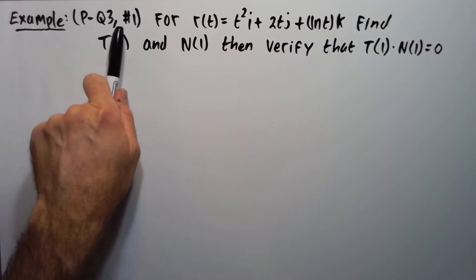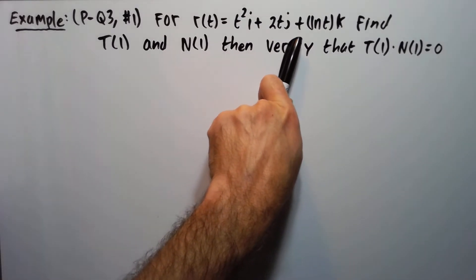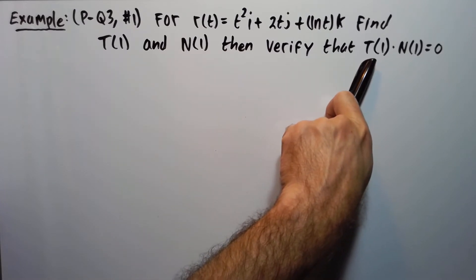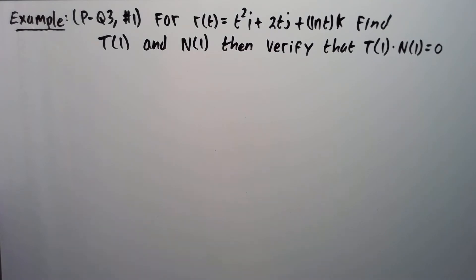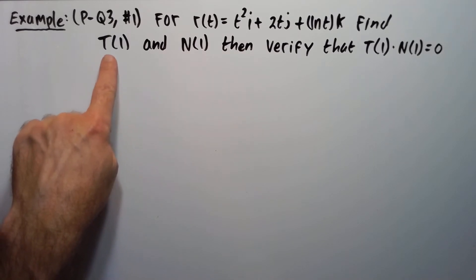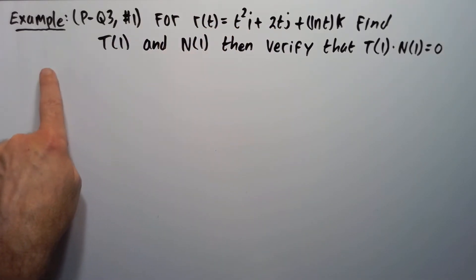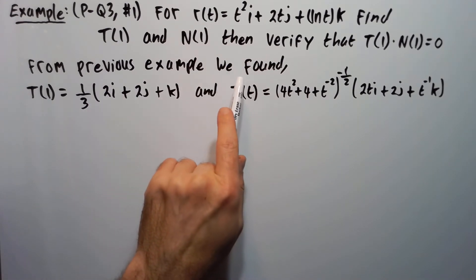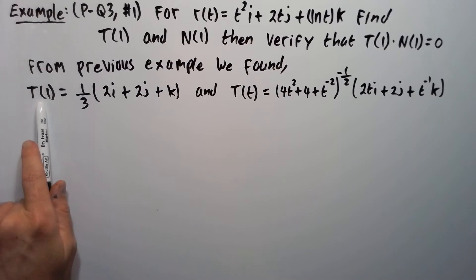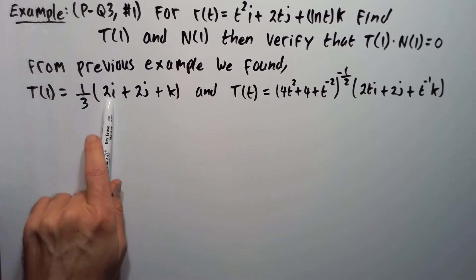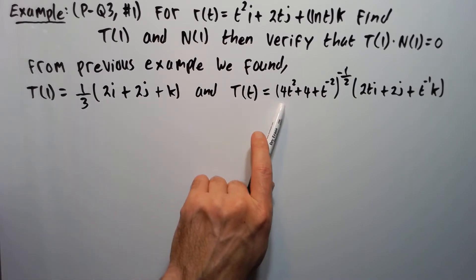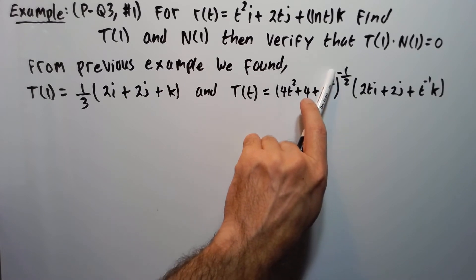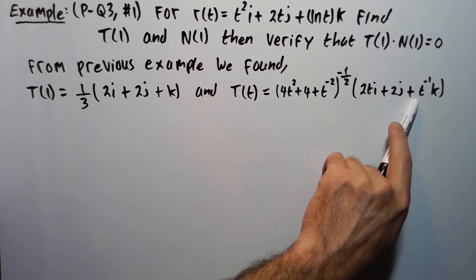The example is from practice quiz 3, number 1. For r of t equal to T squared i plus 2T j plus ln of T k, find capital T of 1 and capital N of 1, then verify that T of 1 dotted with N of 1 equals 0. We've done part of this already. From the previous example we found that capital T of 1 is equal to one third times the quantity 2i plus 2j plus k. And the general capital T was 1 over the square root of 4T squared plus 4 plus T to the minus 2 — written as that expression to the minus one half — times 2T i plus 2j plus T to the minus 1 k.